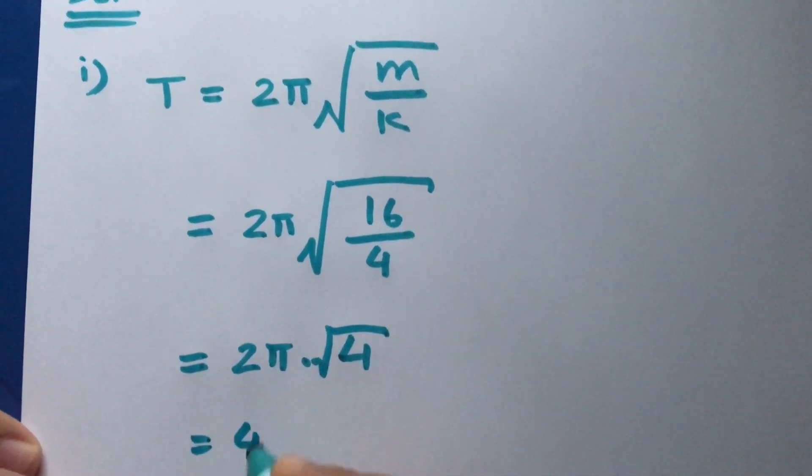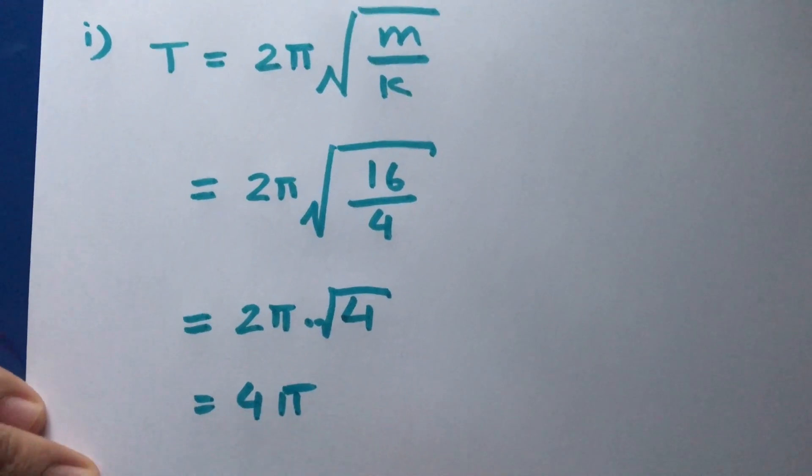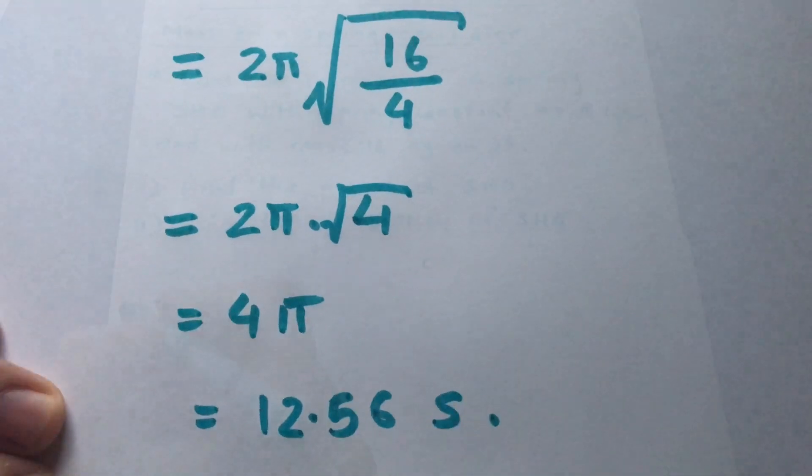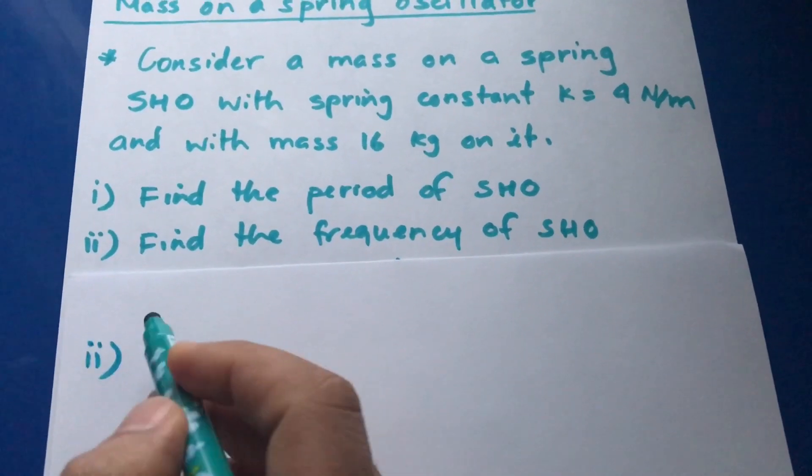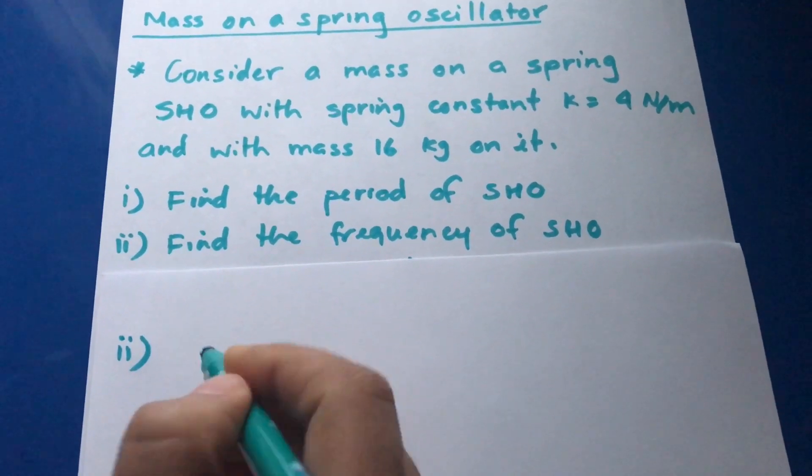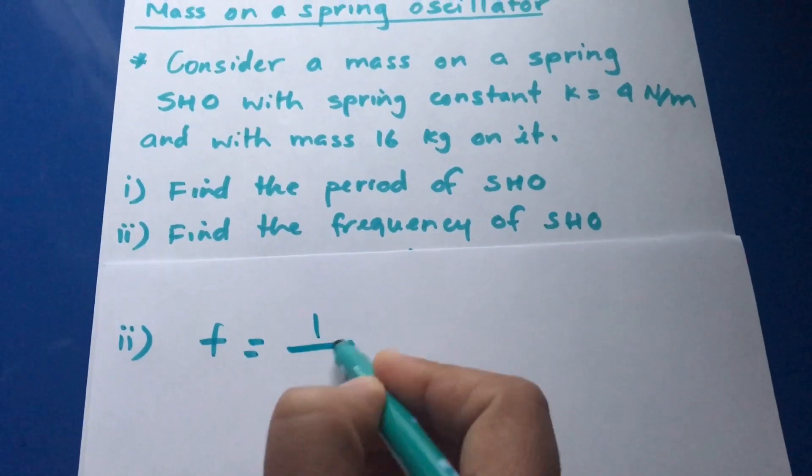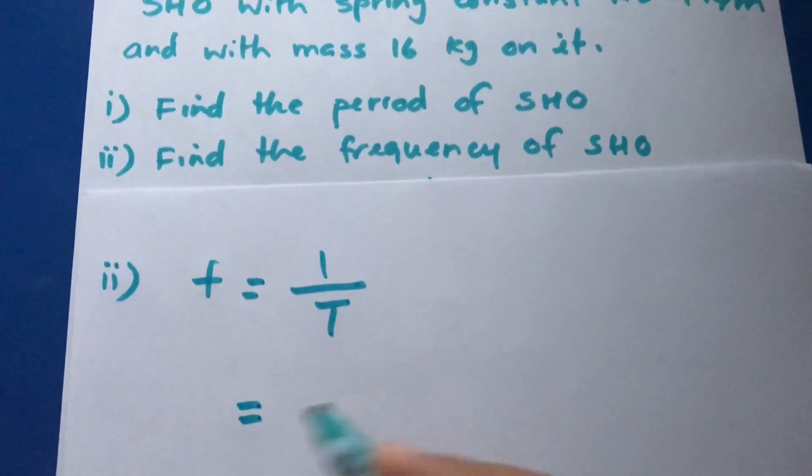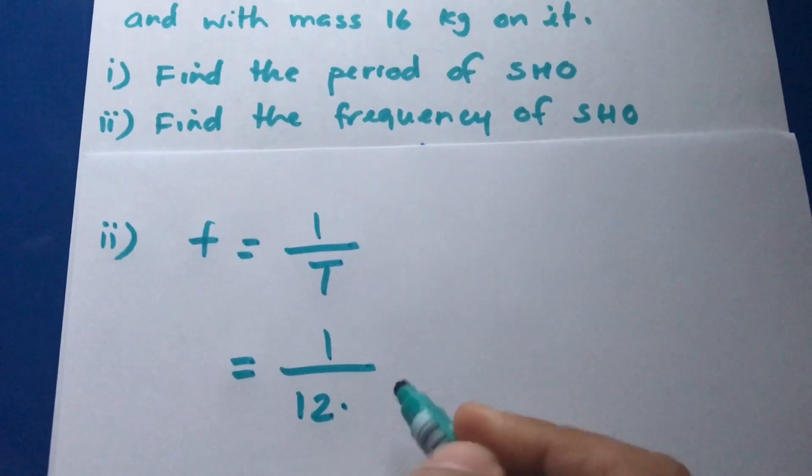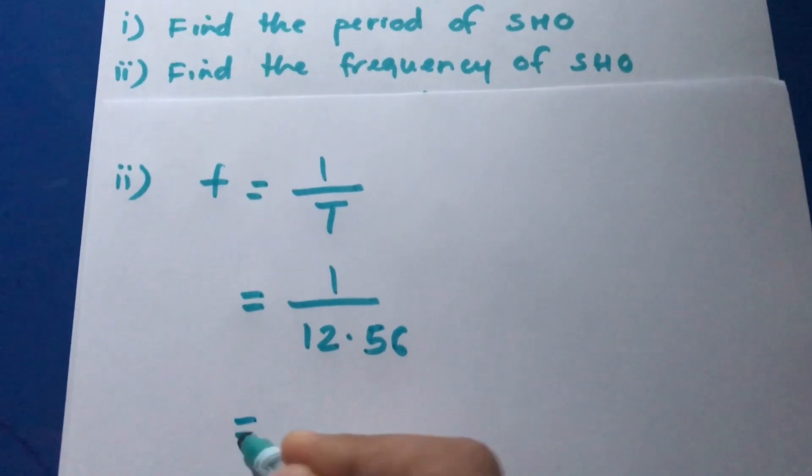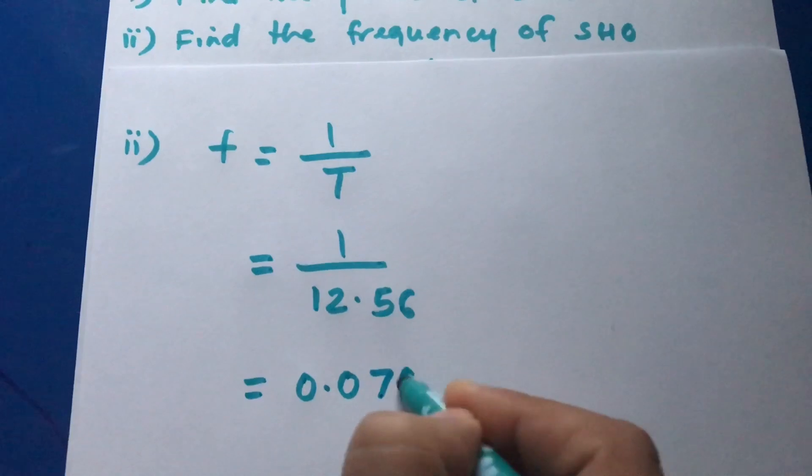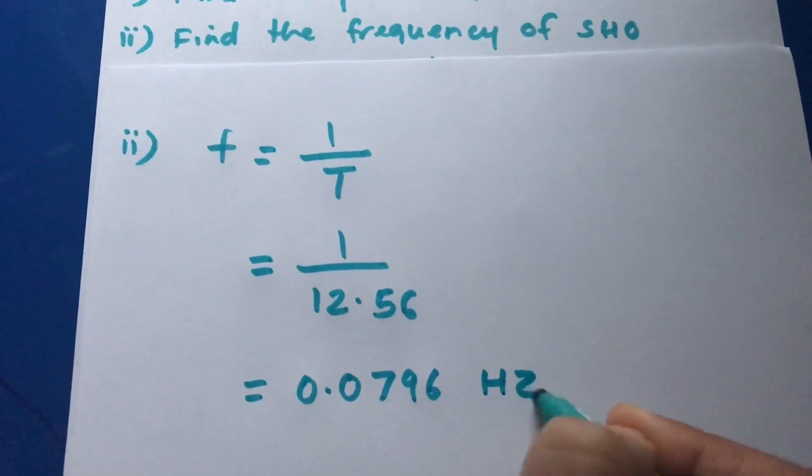The second part reads: You have to find the frequency of SHO. The frequency of simple harmonic oscillator is given by the inverse of time period, which is 1 over 12.56, and this is 0.0796. Frequency has SI unit of hertz.